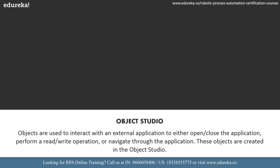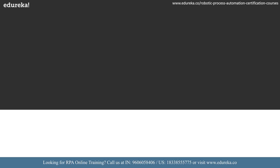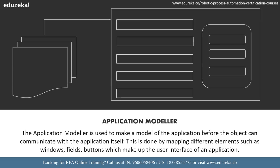Moving on to object studio — objects are used to interact with an external application, to either open or close the application, perform read and write operations, or navigate through the application. These objects are created in the object studio. Objects are used in the process with the help of actions, and each action performs a dedicated task. Data can also be passed between the process and the object bi-directionally.